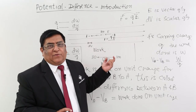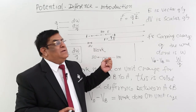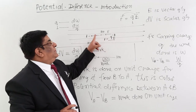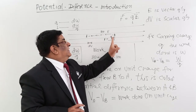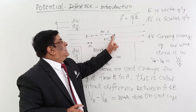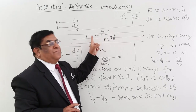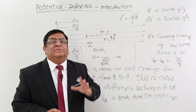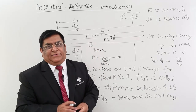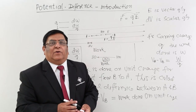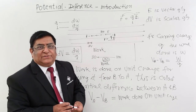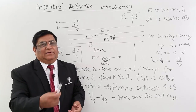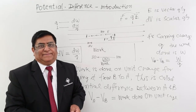Potential difference is a quantity: when we go from one point to another carrying a unit charge, whatever work we have to do, that is known as potential difference. Its units and dimensions we will see in the next lecture.